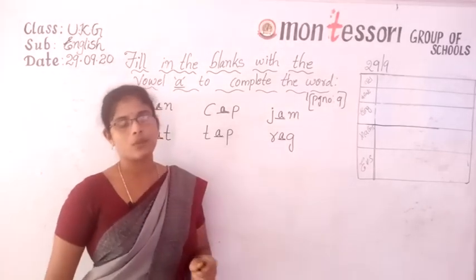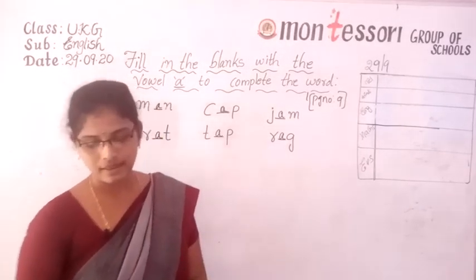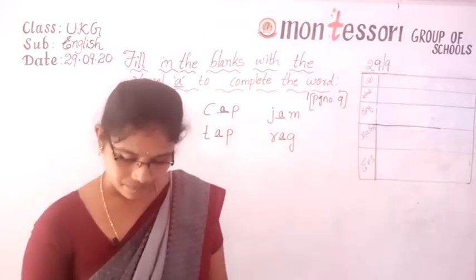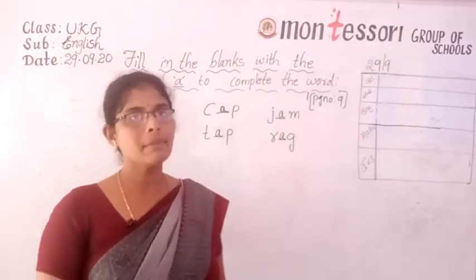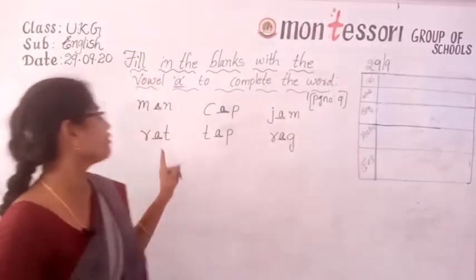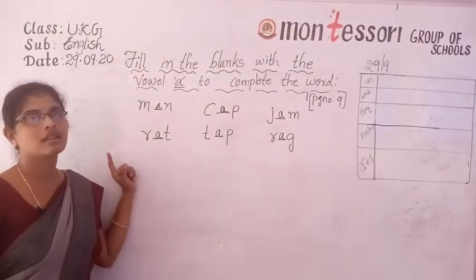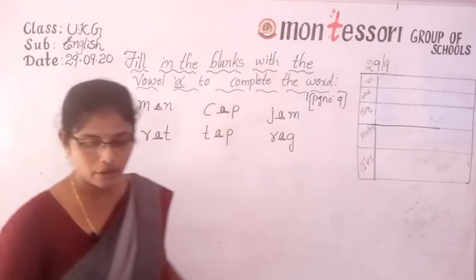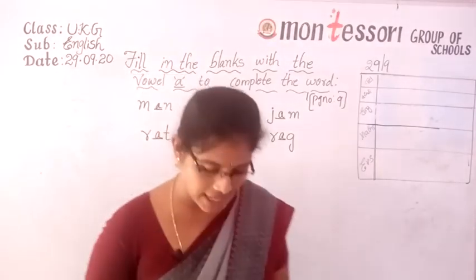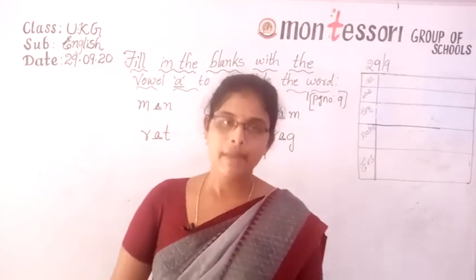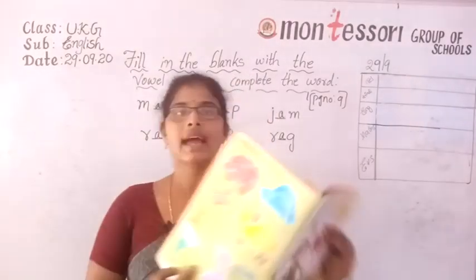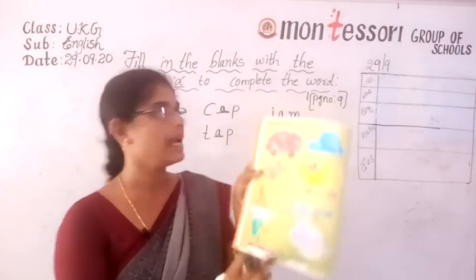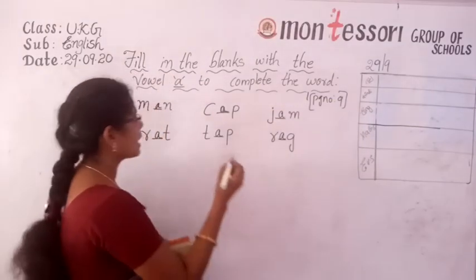M-A-N, man, has already been done as the example. We have done C-A-P, J-A-M, R-A-T, T-A-P, and R-A-G. Have you all completed this? Now you have to turn the page — page number 9 we have completed.